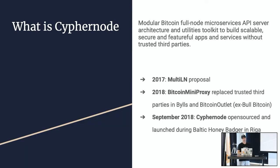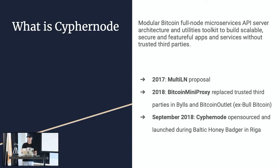What is Cyphernode? This description is one you can find on the repository. It comes from Francis, obviously. 'Modular Bitcoin full node, micro services, API server architecture, and utilities toolkit to build scalable, secure, and featureful apps and services without trusted third parties.' Amazing, right? What does that mean? I'll explain it on the next slide.